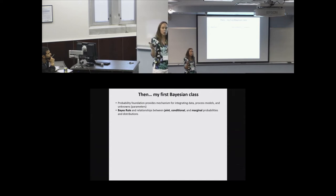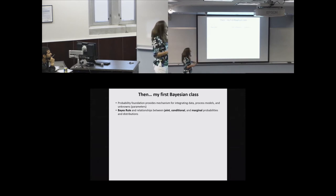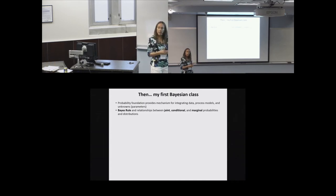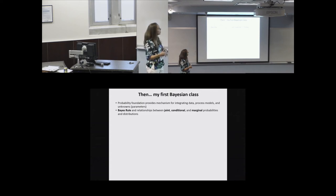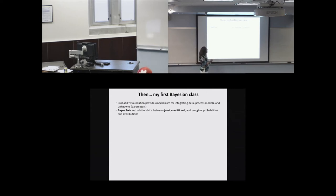The basic idea behind Bayesian — and why I find it so appealing — is that it's based upon simple probability rules that are not contested. It's a probability foundation that provides a mechanism for integrating data of potentially different types with process models — mathematical or theoretical models — and the unknown parameters that describe those models and the data. It makes you think about joint distributions, conditional distributions, and marginal distributions of probabilities, which are the quantities we're trying to estimate.